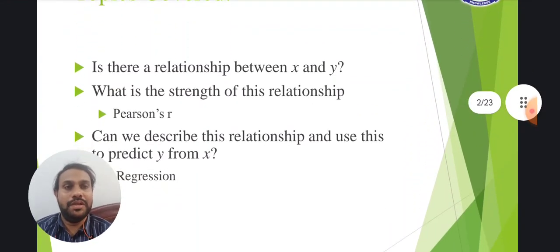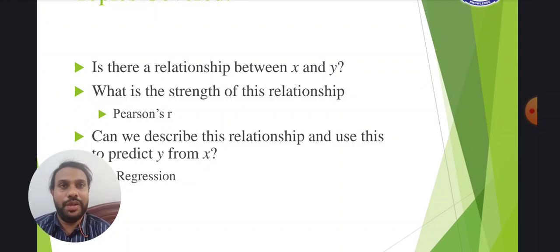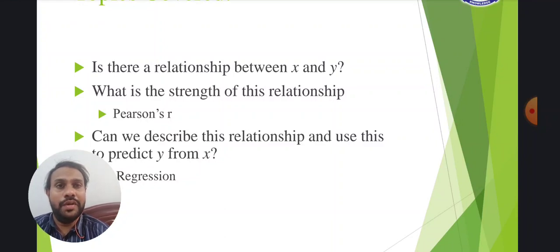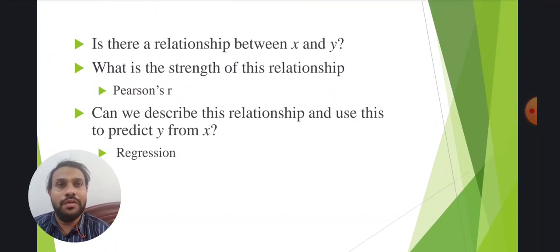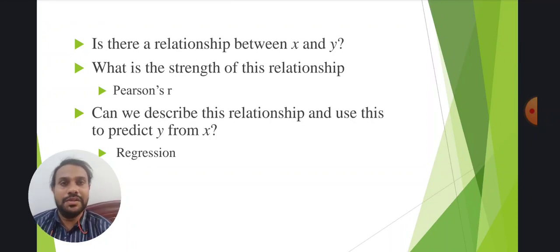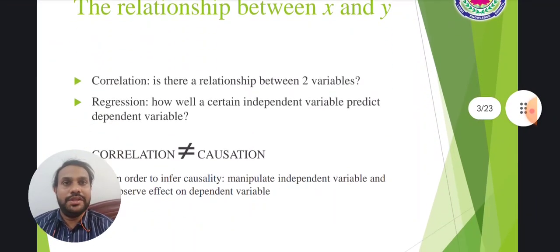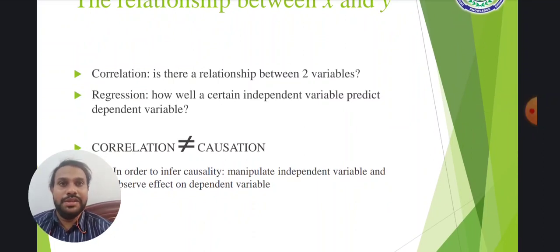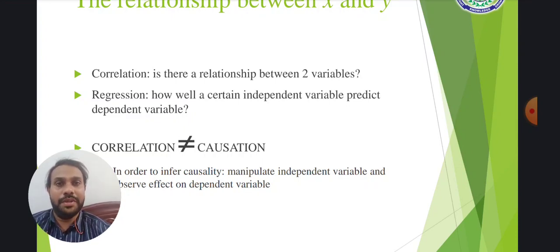The topics covered in this session are: the relation between x and y, and the strength of that relation. The strength of the relation is denoted by covariance, that is r, or Pearson's coefficient r. Then, how can we describe the relations using prediction? Once we find there is a relation between x and y, we can use regression lines to predict the dependency of variables x and y. Correlation asks: is there a relation between two variables? If yes, regression describes how well the independent variable predicts the dependent variable — for example, how x is dependent on y.